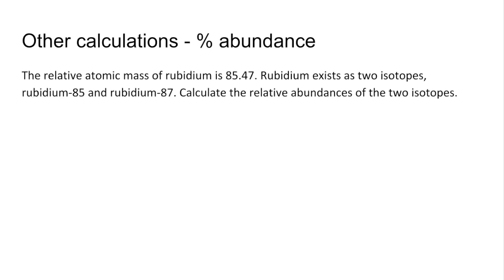So the final type of calculation is where you get asked to calculate the percentage abundance of an isotope. In this calculation, I'm getting us to do both of the isotopes. So we're told the relative atomic mass, 85.47. Two isotopes, 85 and 87, calculate their relative abundances.